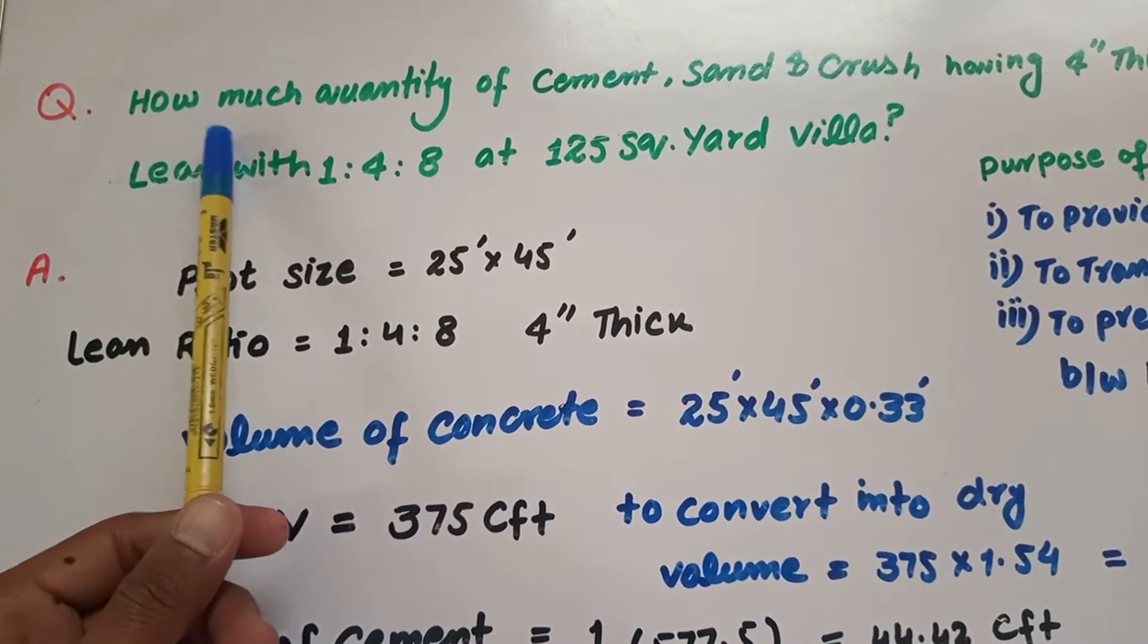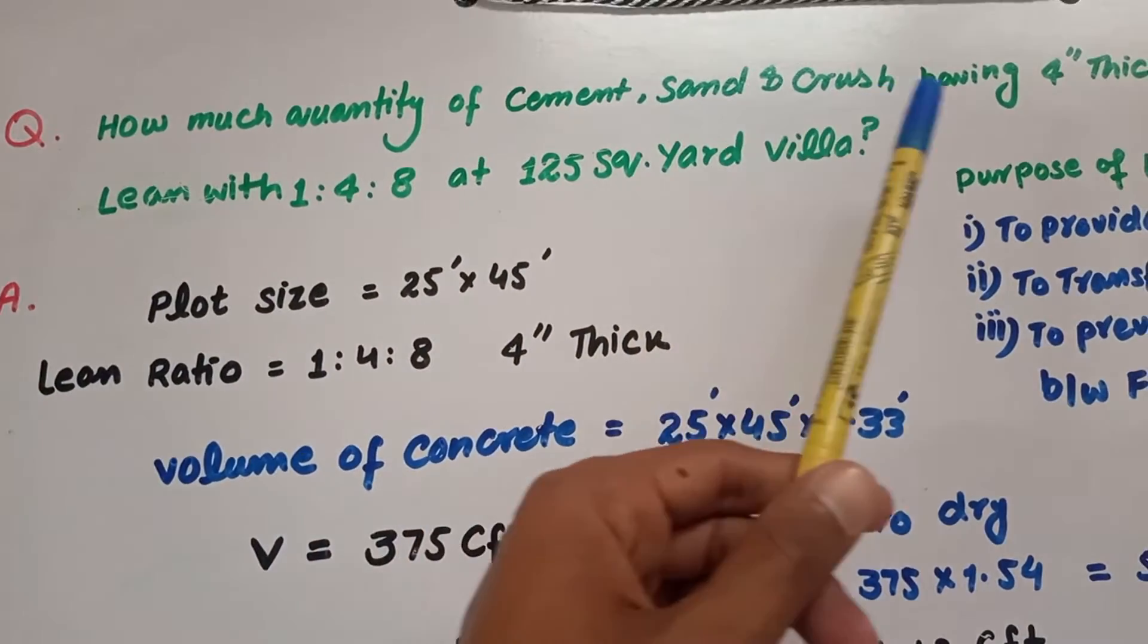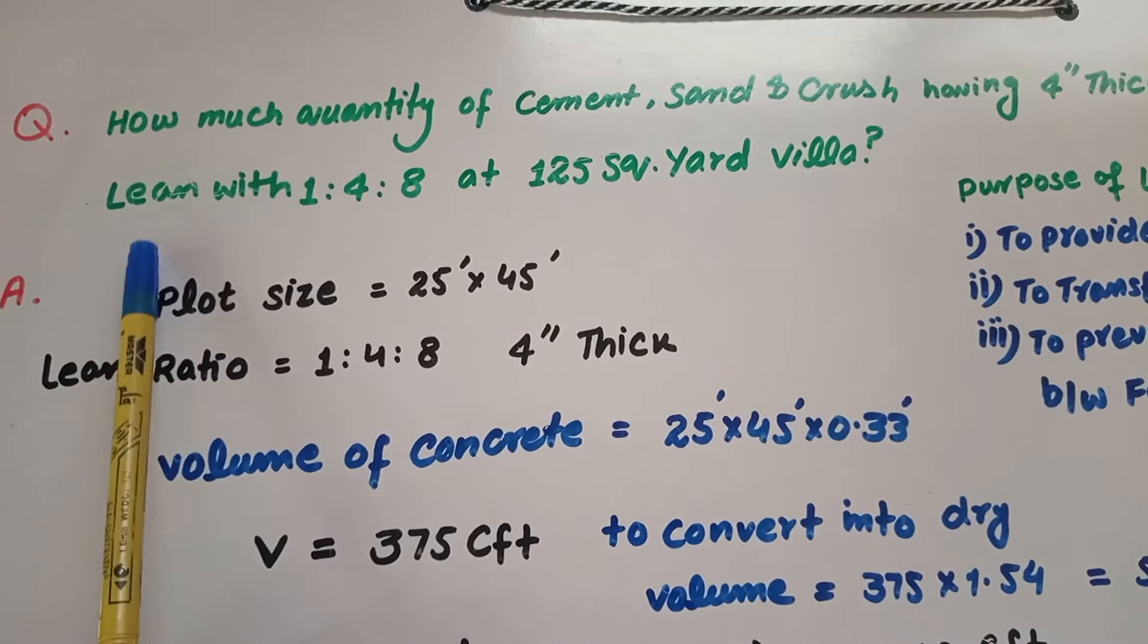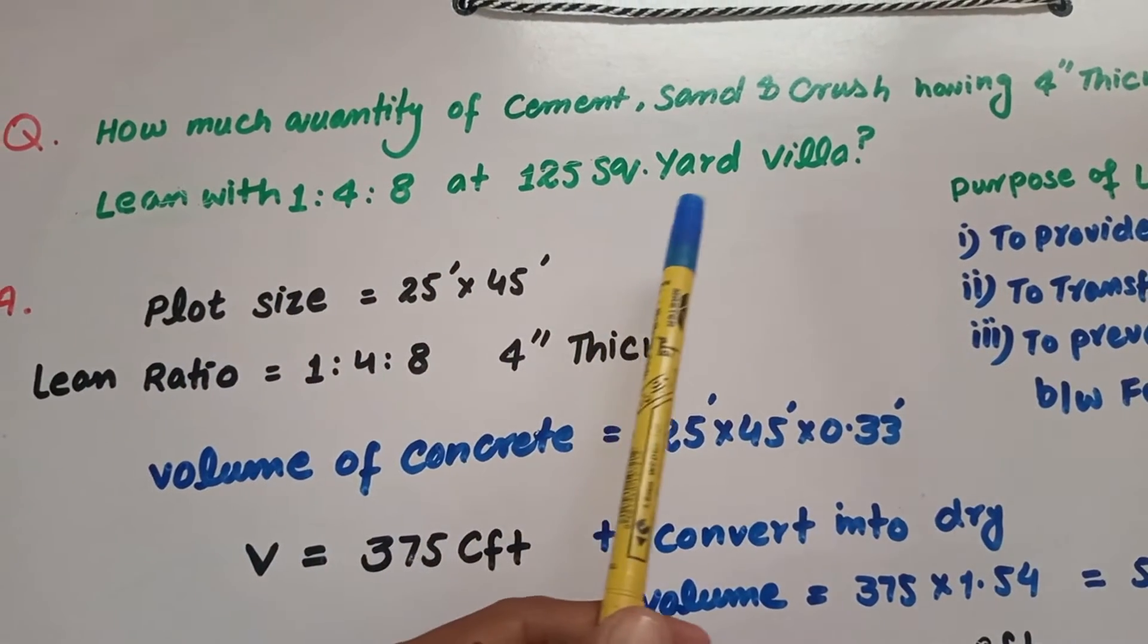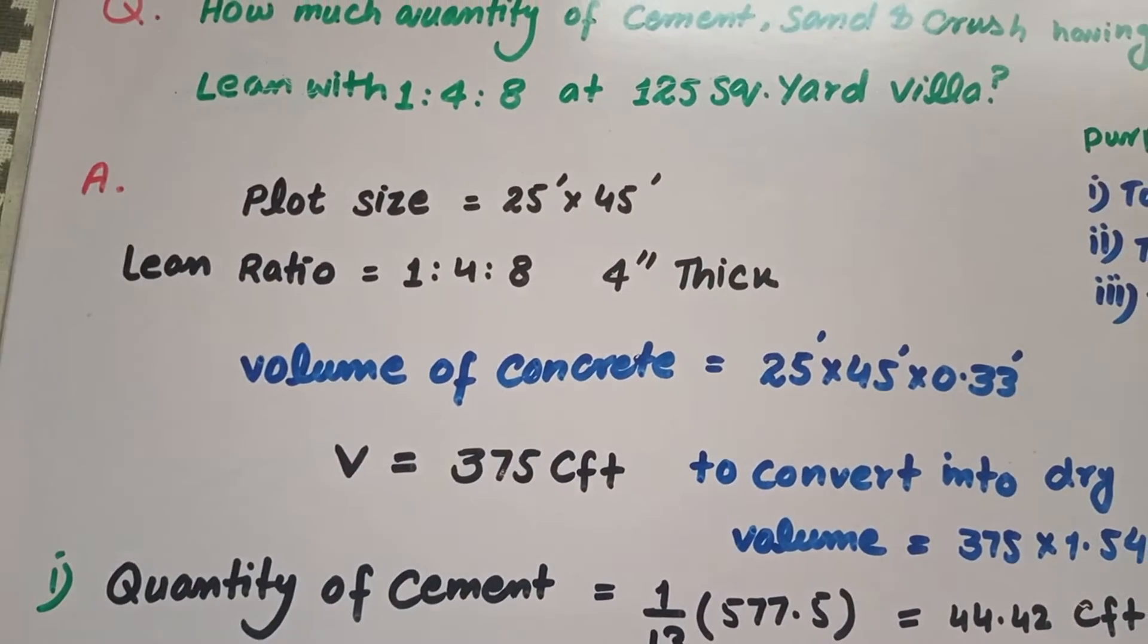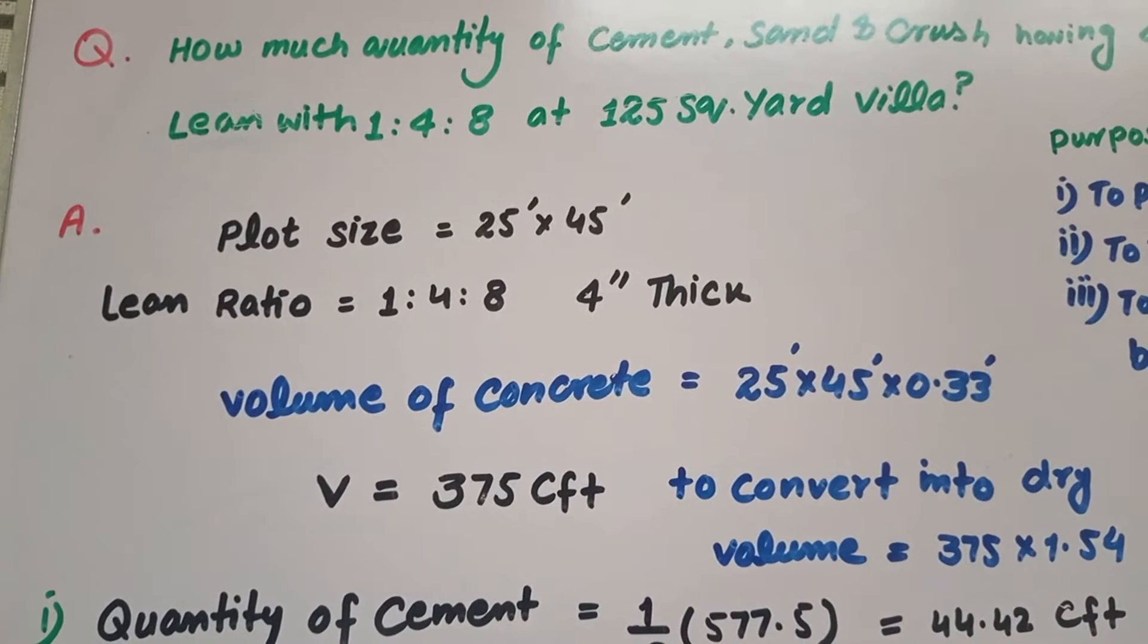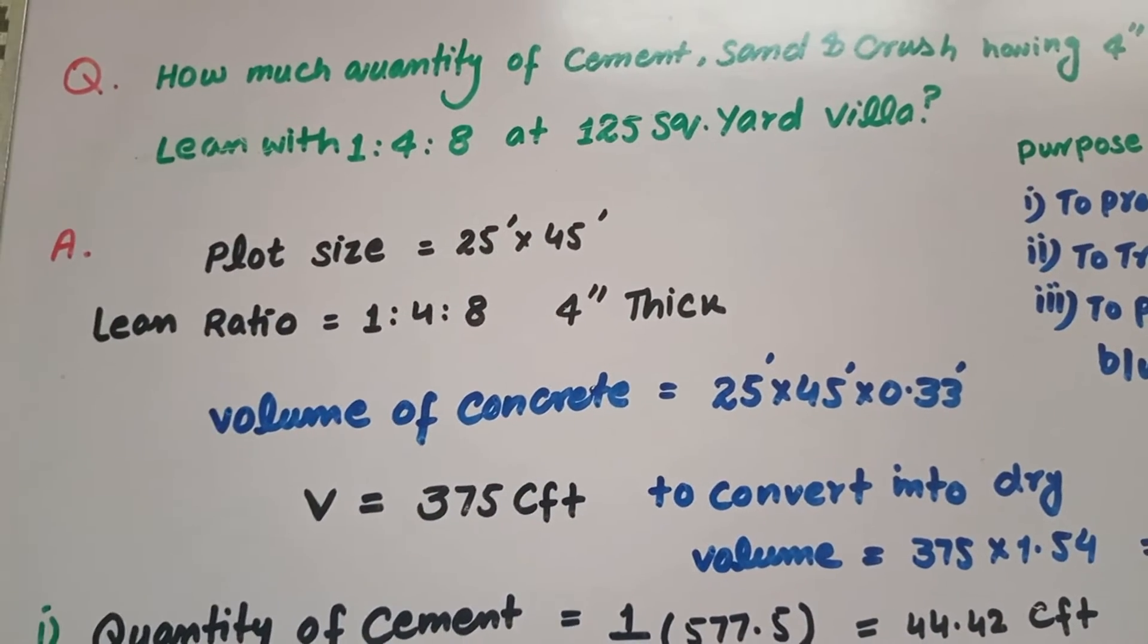How much quantity of cement, sand, and crush is needed for a four inch lean with ratio 1:4:8 at a 125 square yard villa? The plot size is 25 feet by 45 feet, lean ratio is 1:4:8, having four inch thickness. First of all...